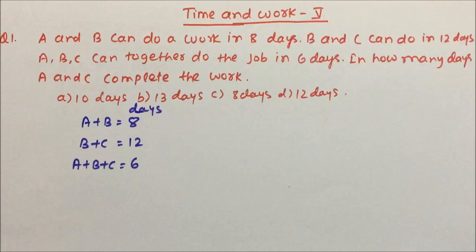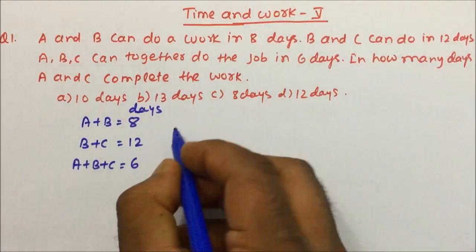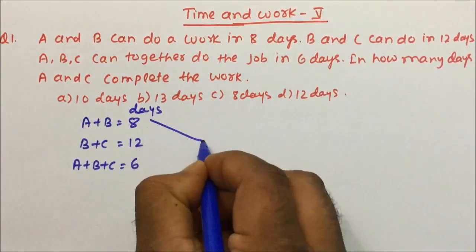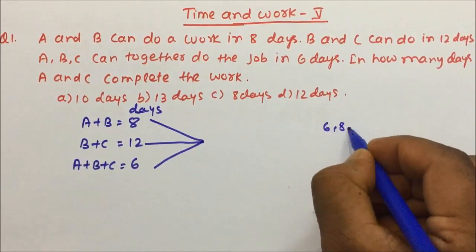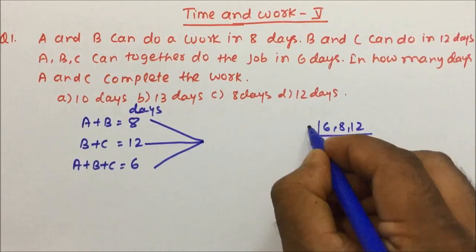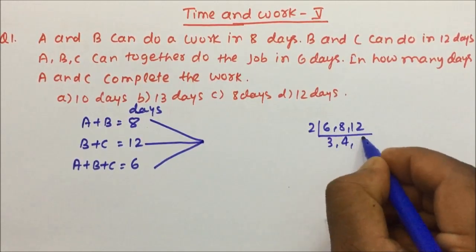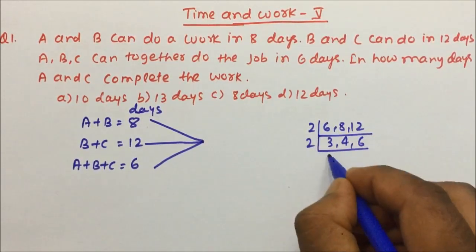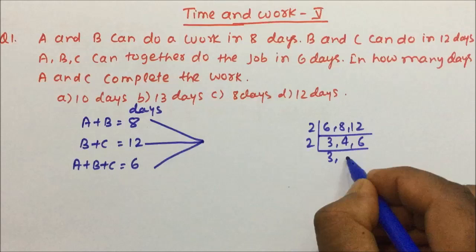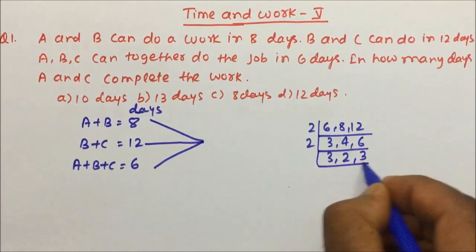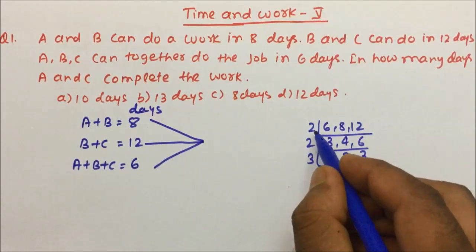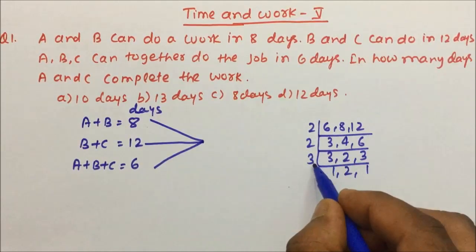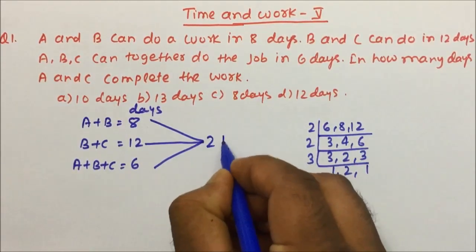We are going to use the LCM method or LCM technique. The first thing we do is find the LCM of 6, 8, and 12. Calculating: 2 × 2 = 4, 4 × 3 = 12, and 12 × 2 = 24. So the LCM is 24.